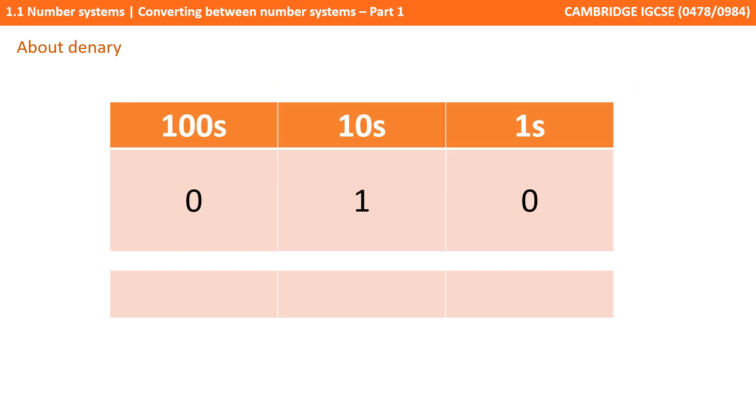So what happens when we get to the number 10? Well, as we have no more unique symbols other than 0 to 9, we say that we have a 1 and a 0. Or in other words, 1 ten plus 0 ones. This continues. And if we think about the number 89, that is 8 tens plus 9 ones, or to put it another way, 8 times 10 plus 9 times 1. To store numbers above 99, we simply introduce another column. This denary number system is known as base 10.